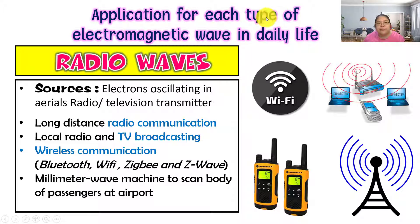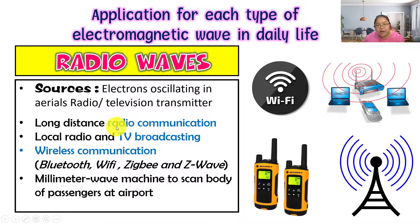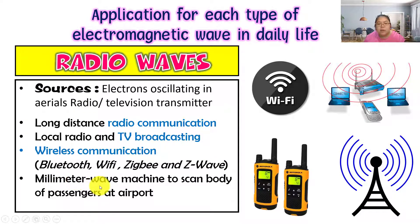Now we look at the applications of each electromagnetic wave in daily life. For radio waves, the sources come from electrons oscillating and radio/TV transmitters. Applications include long-distance radio communication like car FM radio, local radio and TV broadcasting, wireless communication such as Wi-Fi, Bluetooth, ZigBee, and Z-wave, and also millimeter wave machines to scan the body of passengers at the airport. Walkie-talkies also use radio waves.